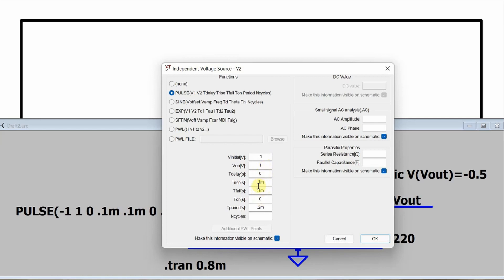The rise time is 0.1 milliseconds, so that's how long it takes to go from the bottom value to the top value. And the fall time is also 0.1 milliseconds, how long it takes to go from the higher value to the lower value. We're not going to have it on for any length of time, so it's always going to be either rising or falling. And the period is 0.2 milliseconds.